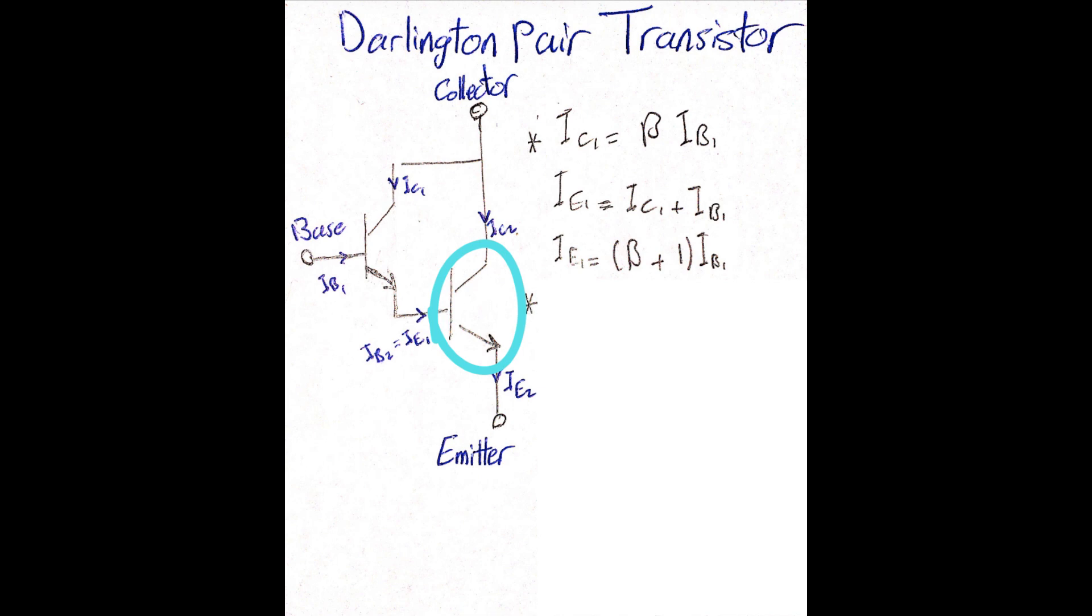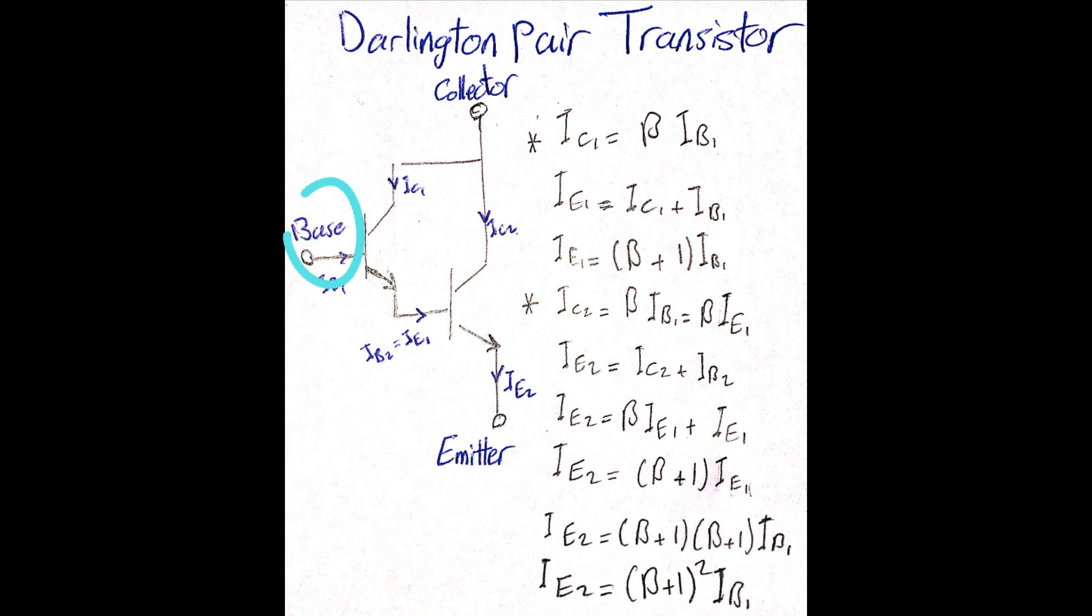And by applying the same rule for the second transistor, we can see that the emitter current of the second transistor is nothing but the first transistor emitter current amplified, which is the amplification of the base current.